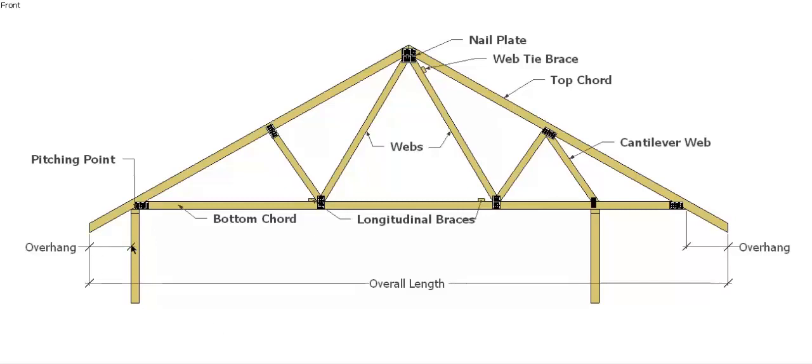Now overhang is the distance from the outside of the truss to the wall, to the inside of that pitching point.